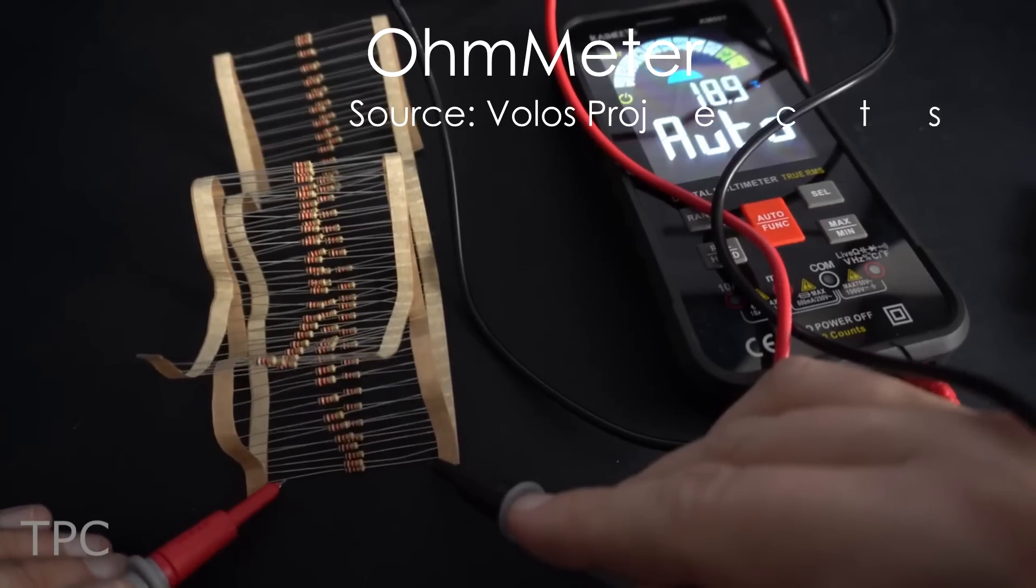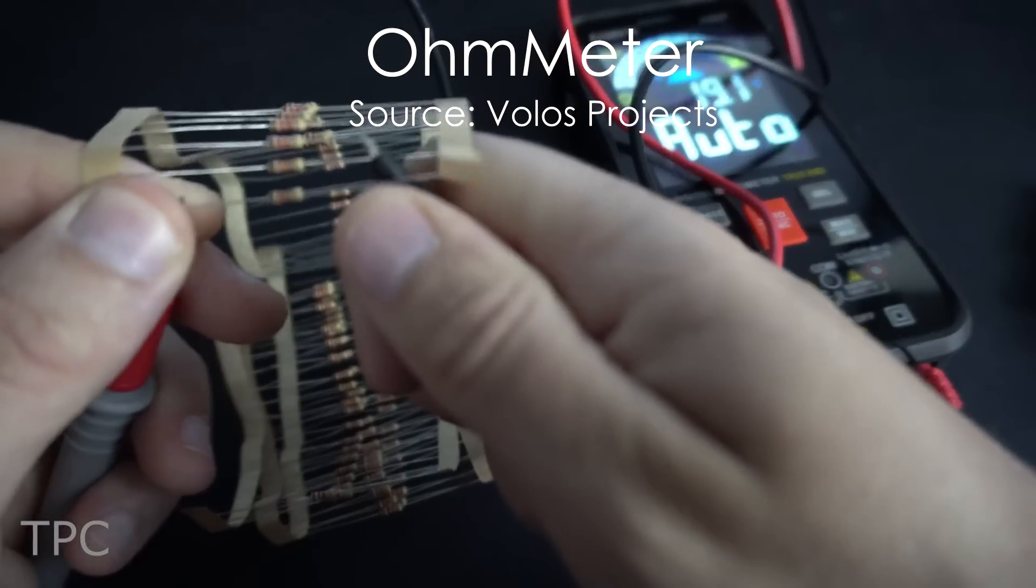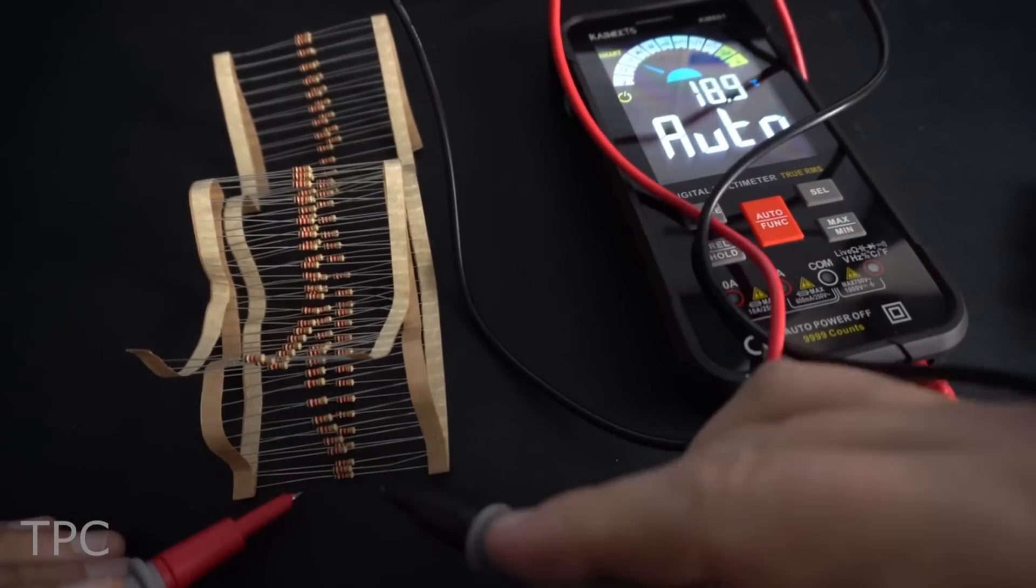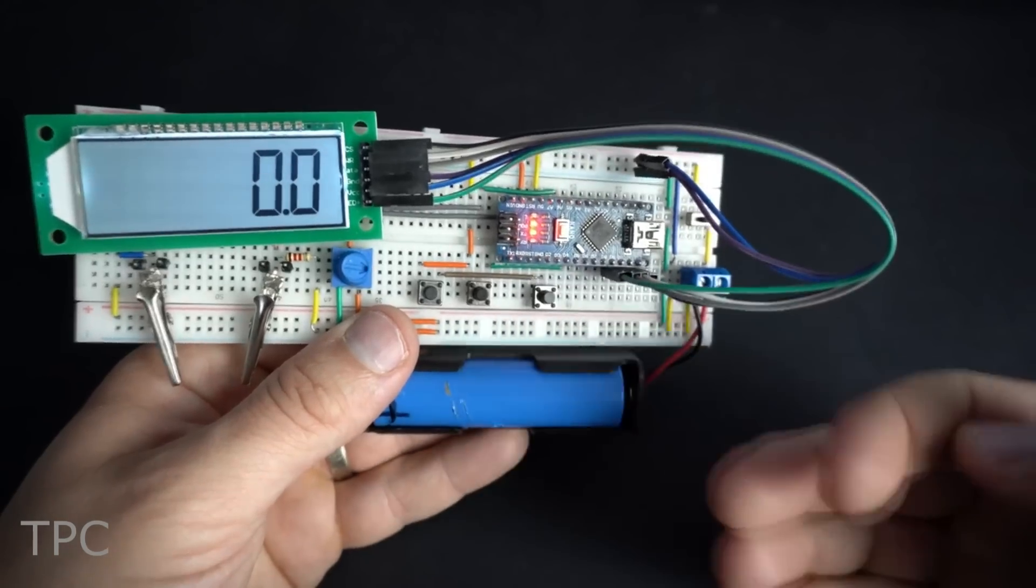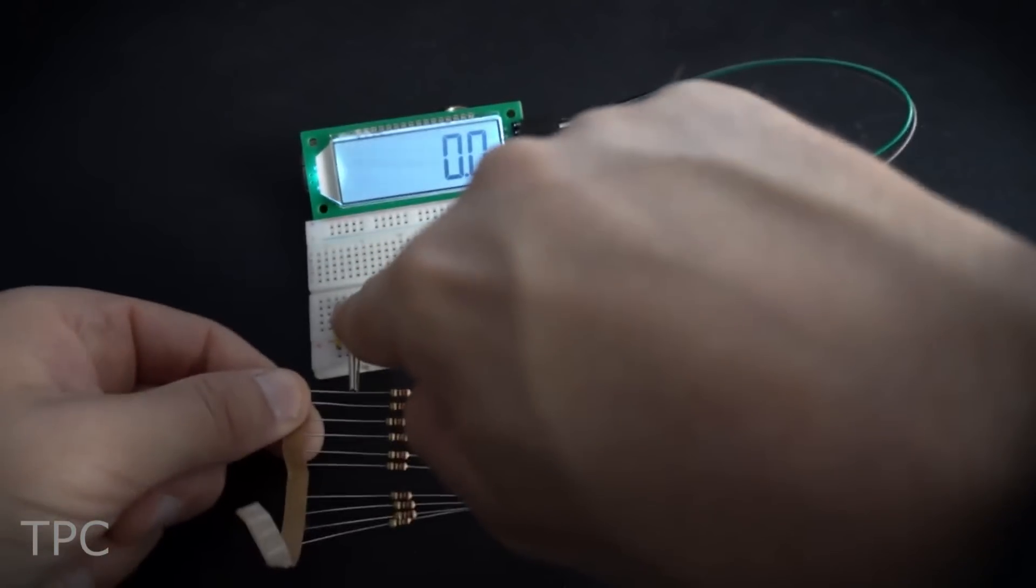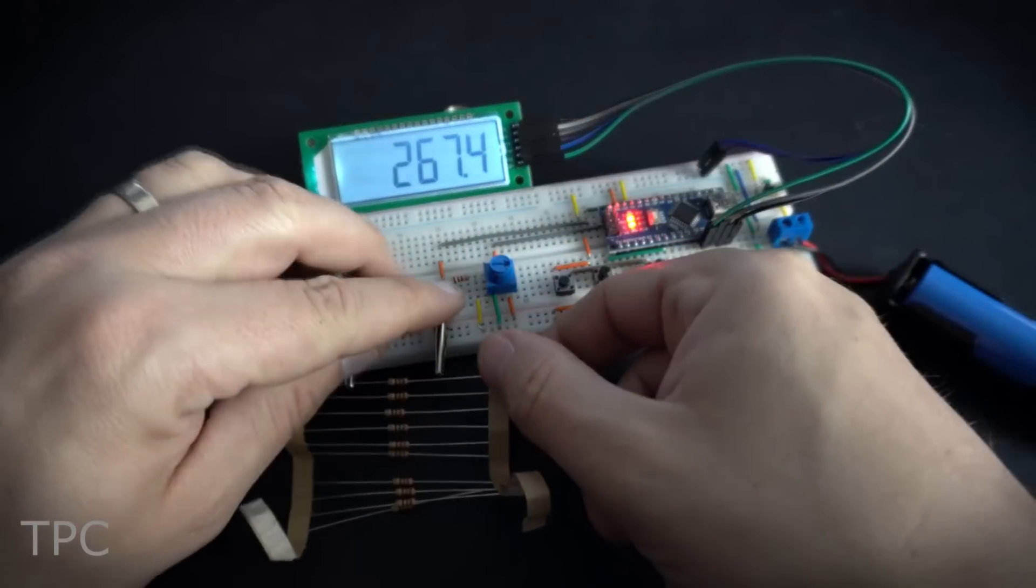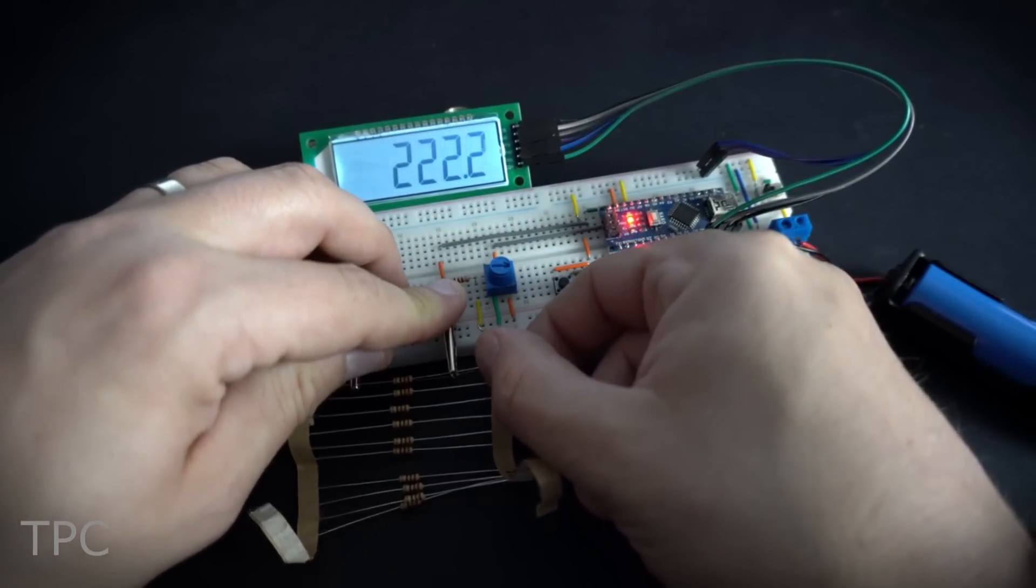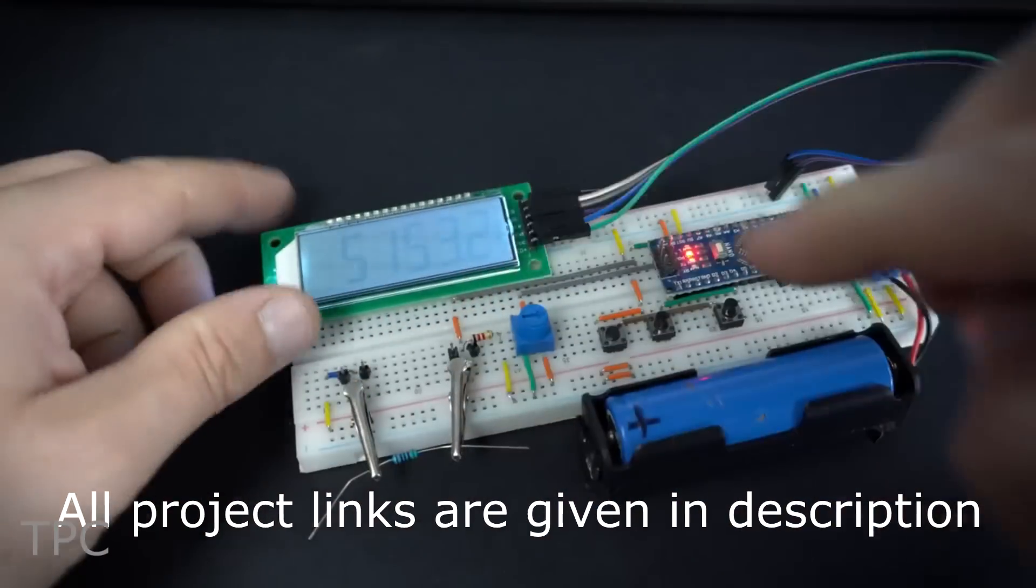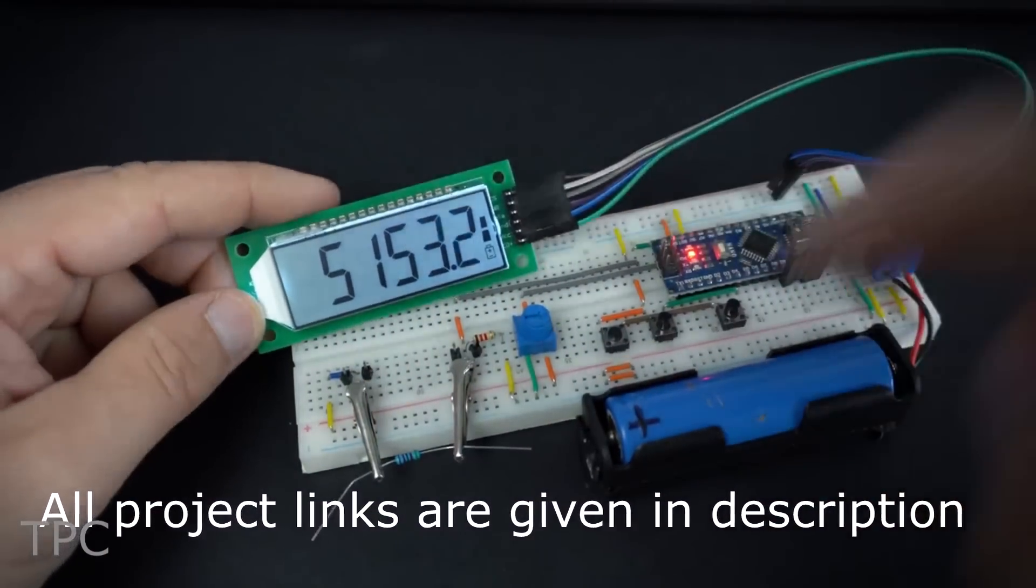Sometimes measuring the resistance of tiny resistors can be very clumsy. You can even accidentally measure the resistance of your body and get the wrong results. So, to eliminate this problem you can use an ohm meter made using Arduino. The process to measure the resistance using this ohm meter is very simple. Just place the resistor in two specially designed clips and that's it. The seven segment display will show the resistance in ohms.